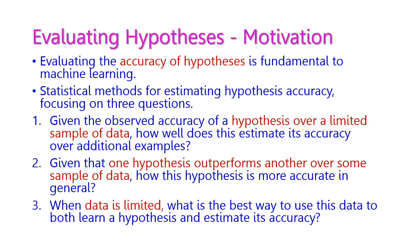Evaluating the accuracy of a hypothesis is very important in any machine learning or statistical method. For estimating hypothesis accuracy, it focuses on three key questions. The first one is: given the observed accuracy of a hypothesis over a limited sample of data, how well does this estimate its accuracy for additional samples?